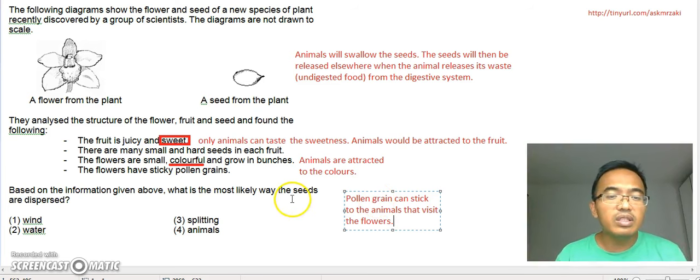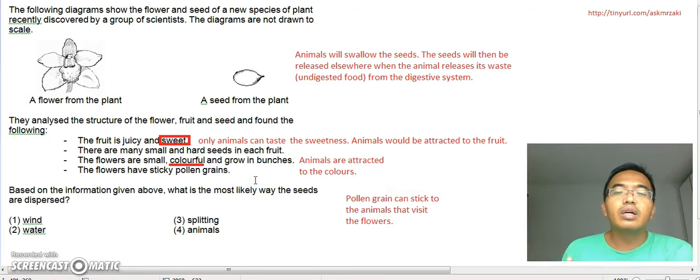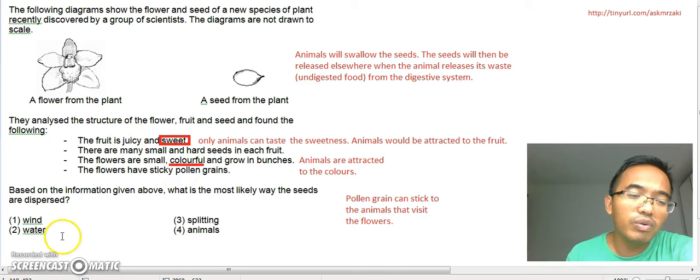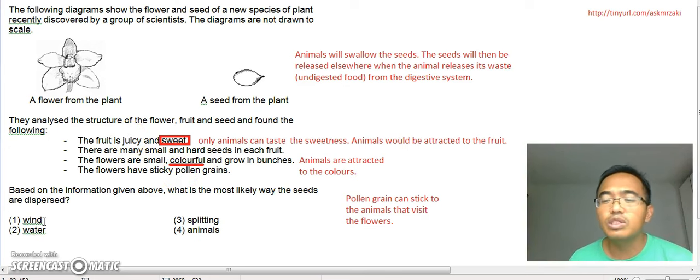So as you can see, all the data, all the information given will point you to the right answer. So based on the information above, what is the most likely way the seeds are dispersed? And the answer is, of course, animals, right? Because it does not have to be sweet and juicy and colorful for wind to disperse it.